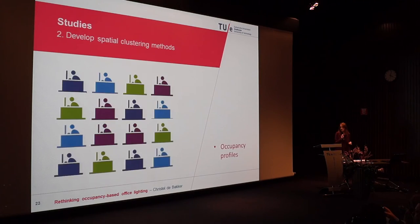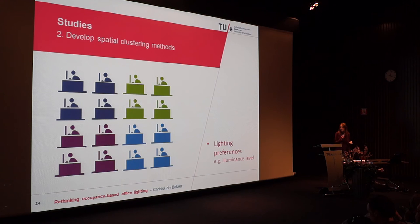Once I have identified individual occupancy patterns, I can cluster those with similar ones. So while a zone of four occupants might previously have had different profiles, I could cluster those with similar profiles to achieve more optimal lighting use. For example, those who arrive early and go home early would only require lighting during that period. It is also important to account for lighting preferences, since some people need more light than others — for example, because they are older or wear glasses. If such workers are placed next to each other, optimal lighting use still cannot be achieved.